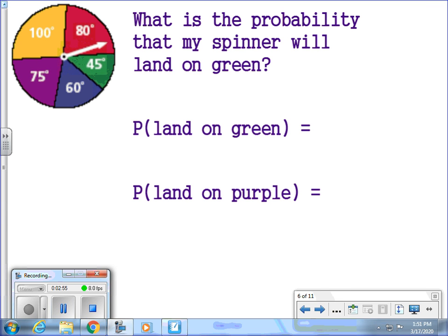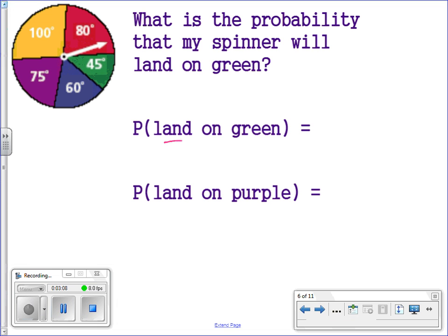and 100 degrees in yellow. Knowing that this is a circle, or if you just add up all the degrees, you will see that the total degrees is 360. So for our first problem here, we want to find what is the probability that the spinner will land on green? Well, the degrees for green here we see is 45 degrees. So 45 divided by the total number of degrees, which we already said was 360.